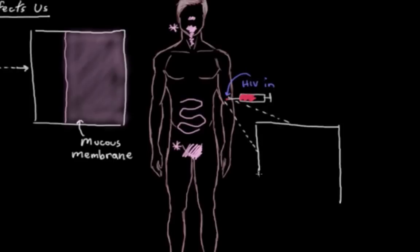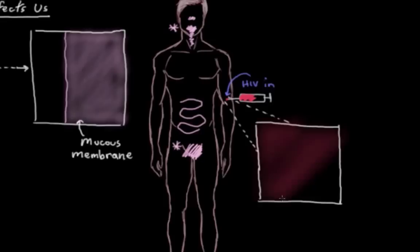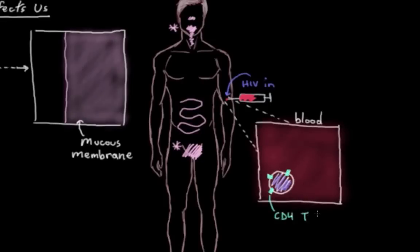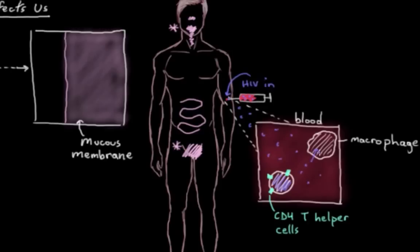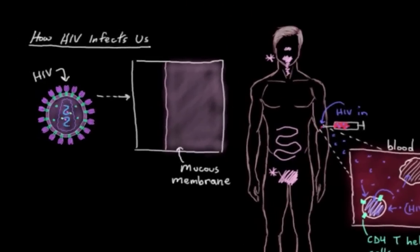We can sort of intuitively see how HIV can attack our white blood cells — like our CD4-T helper cells or our macrophages — when it's directly put in the bloodstream. But what's less obvious is how HIV gets into our bodies across our mucous membranes. I mean, they look like barriers.